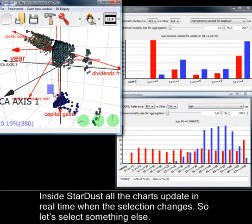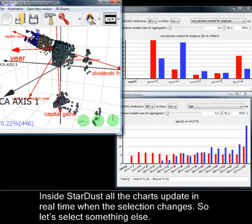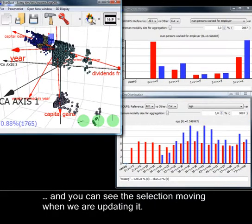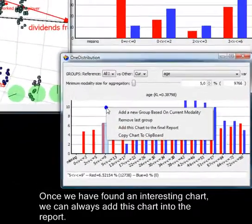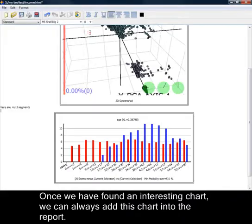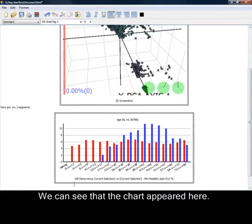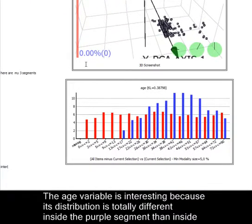Inside Stardust, all the charts update in real time when the selection changes. So, let's select something else. And, you can see the selection moving when we are updating it. Once we have found an interesting chart, we can always add this chart into the report. We can see that the chart appeared here.